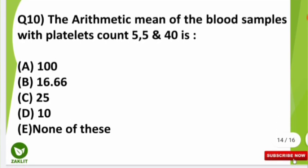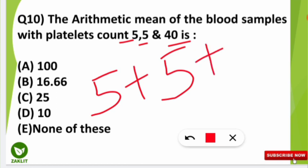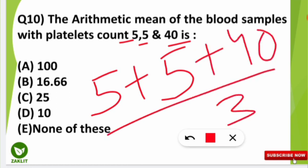The final question was: the arithmetic mean of blood samples with platelet counts 5, 5, and 40 is how much? Simply add all three values: 5 plus 5 plus 40, then divide by the number of terms, which is 3. Solving this gives 16.66, so option B is the correct answer.